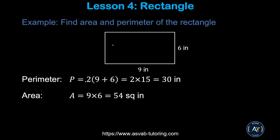Let's apply a word problem using that formula. This rectangle has length equal to 9 and width equal to 6. Perimeter equals 2 times (length + width), so 9 plus 6 is 15, and 2 times 15 is 30 inches. The area is 9 times 6, which is 54 square inches.